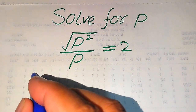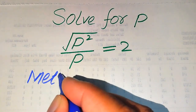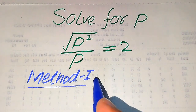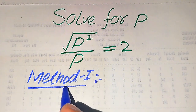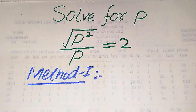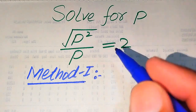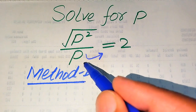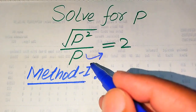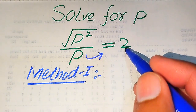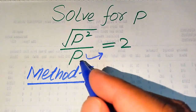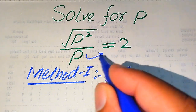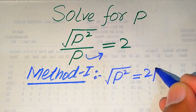We will solve this problem using two methods. I hope you like both of these methods, but if you have any other method in your mind, please don't hesitate to write it in the comment section. Now we move towards the solution using the first method. Here we need to move p to the right-hand side — since p divides the left-hand side, moving it gives √(p²) = 2p.